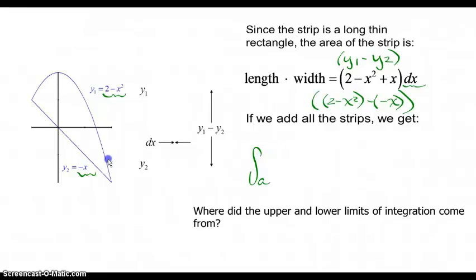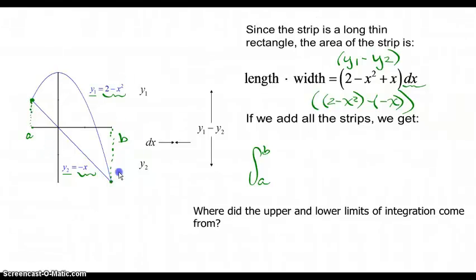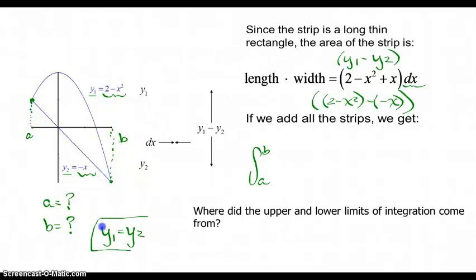Our limits of integration start at a and stop at b. The lower limit a comes from the intersection point between y1 and y2 on the left side of the y-axis, and b is the right intersection point. We have to find a and b ourselves by recognizing that intersection points occur where y1 equals y2 — that's where functions equal each other — and those give us the values of a and b. We have to do this by hand a lot.